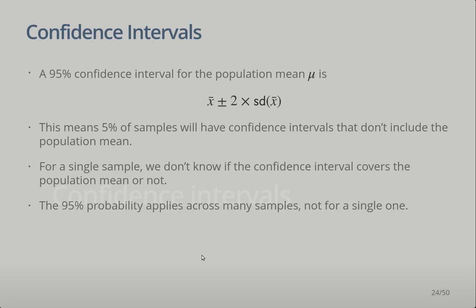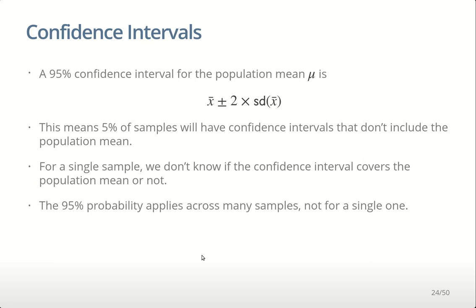A 95% confidence interval for the population mean mu is the sample mean plus or minus twice the standard deviation of the sample mean. The standard deviation of the sample mean equals the sample or population standard deviation divided by the square root of the sample size. As we increase the sample size, that standard deviation is going to reduce, because we've got square root n on the denominator — as n gets bigger, 1 over square root n gets smaller, which makes sense: increasing sample size reduces uncertainty.